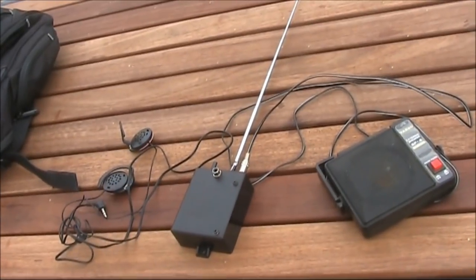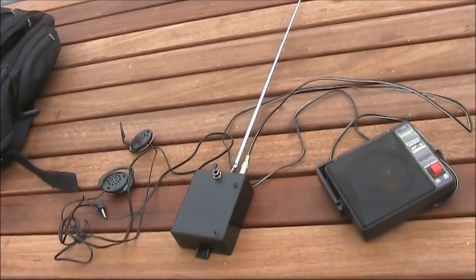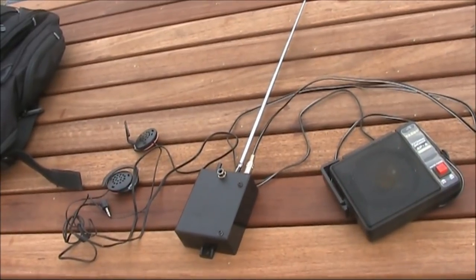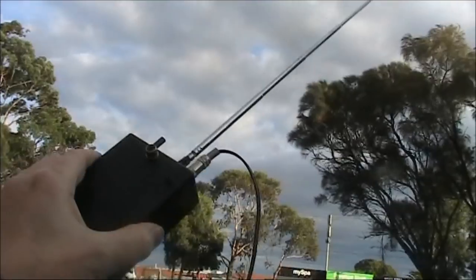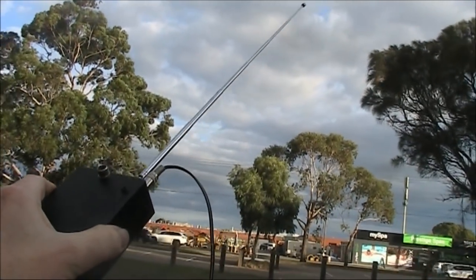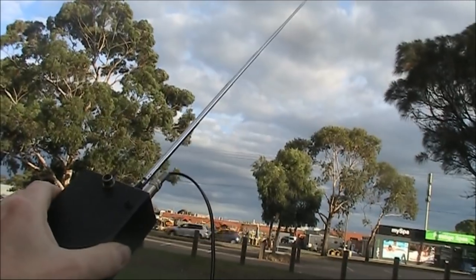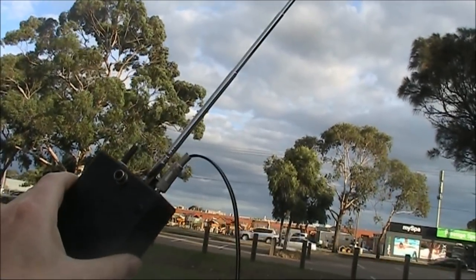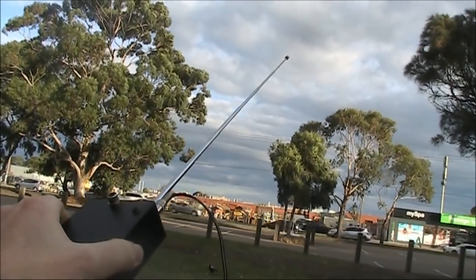My first test of the broadband receiver is about one kilometer from Melbourne's Moorabbin Airport. There's no selectivity, but when you move the receiver around and, to a lesser extent, change the length of the antenna, different signals become audible.